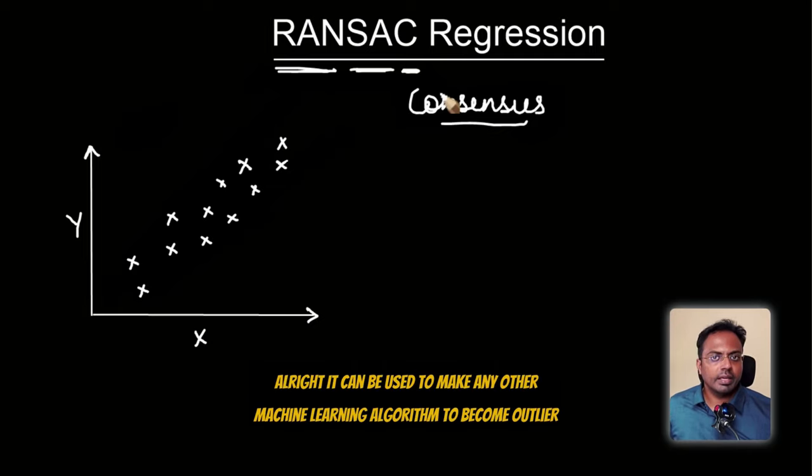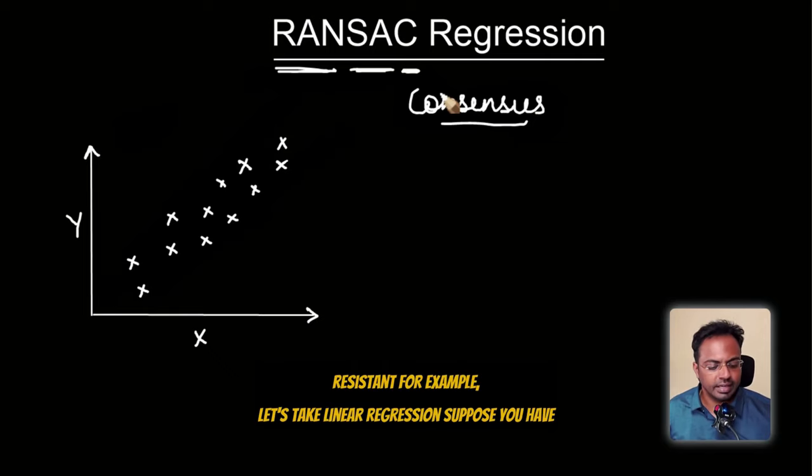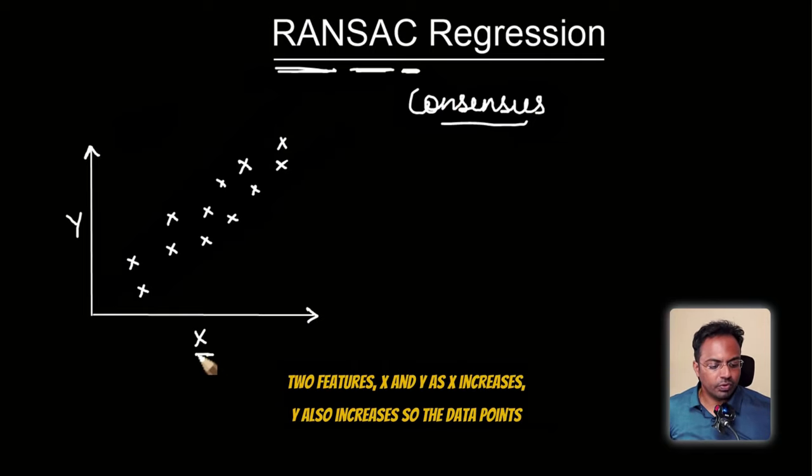It can be used to make any other machine learning algorithm become outlier resistant. For example, let's take linear regression. Suppose you have two features X and Y. As X increases, Y also increases.